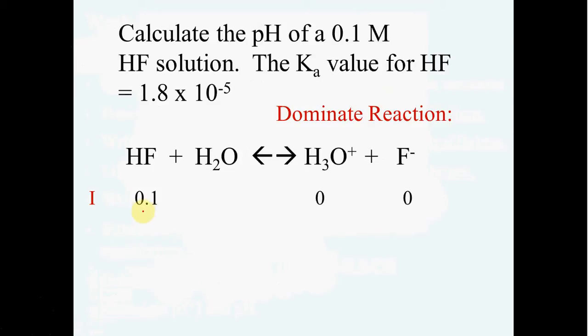You'll write your ICE expression putting in your 0.1 molar. You have no initial concentrations of the hydronium or fluoride ion. You will lose x, gain x, and gain x stoichiometrically. You then end up with 0.1 minus x, x and x.